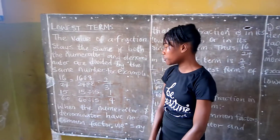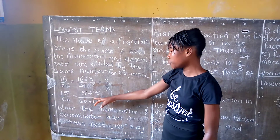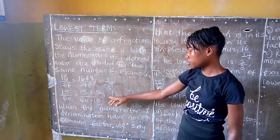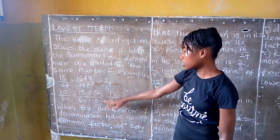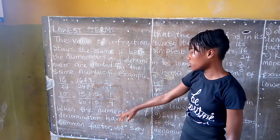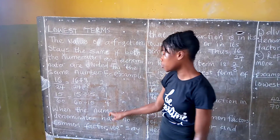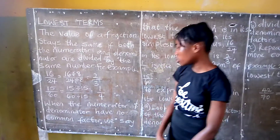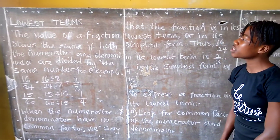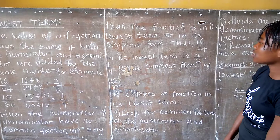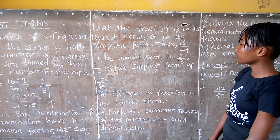Another example: 15 over 60 equals 15 divided by 15 and 60 divided by 15, as 15 is the common factor, which equals 1 over 4. So when the numerator and denominator have no common factor, we say that the fraction is in its lowest terms or in its simplest form.